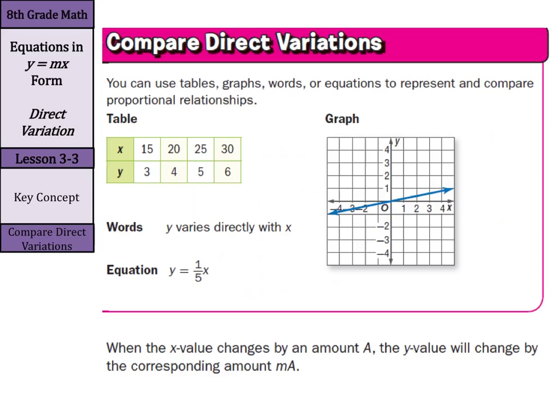When we want to compare direct variations, we can use tables, graphs, words, or equations to represent and compare proportional relationships. We can see our table, where if our x is going up, our y is going up. We can see our graph, we can have an equation, we can have words. And when the x value changes by an amount A, the y value will have to change by the corresponding amount M times A.